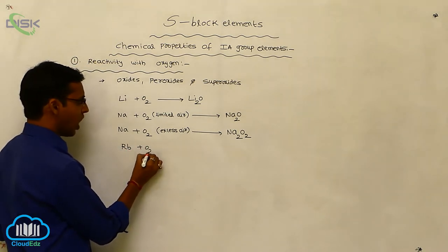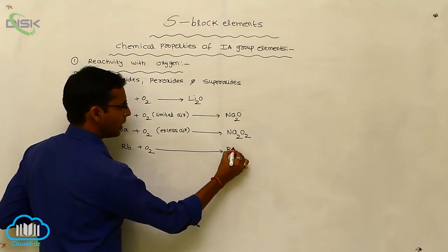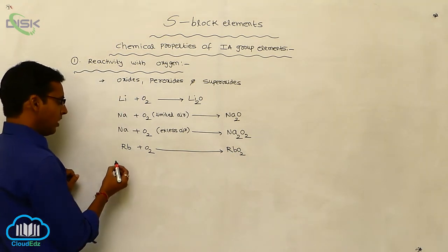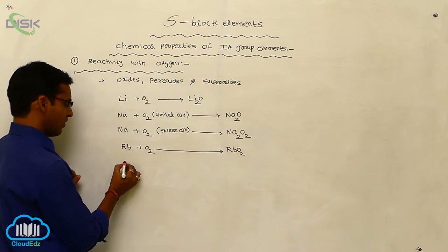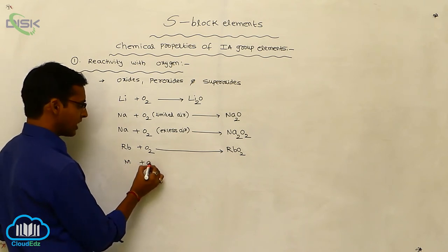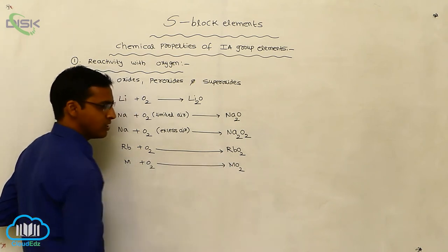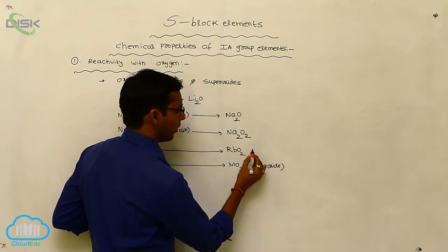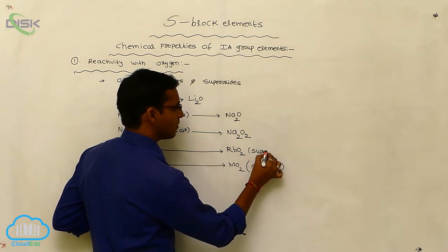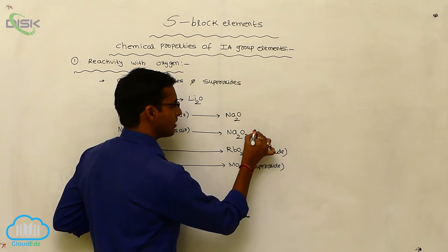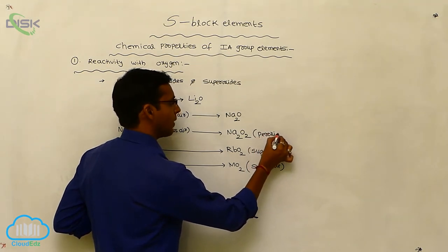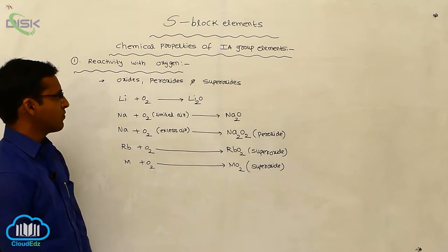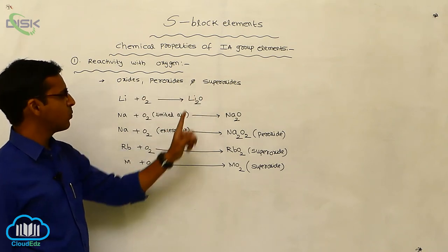Rubidium reacts with oxygen and forms rubidium superoxide, MO₂. Generally, for a metal M reacted with oxygen, it forms MO₂, which is called a superoxide. So rubidium superoxide is a superoxide, and sodium peroxide is a peroxide. Different oxides are produced from first group elements: oxides, peroxides, and superoxides.